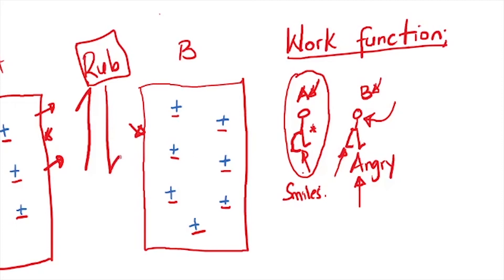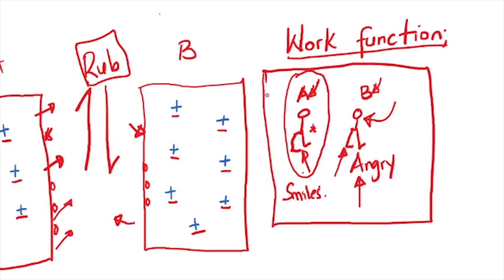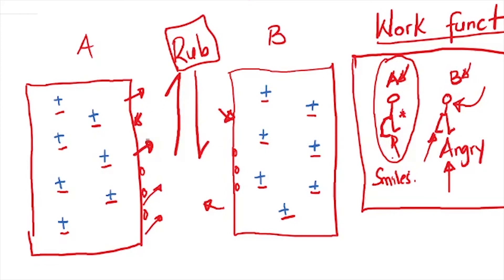The work function is the amount of energy you need to get an electron from the surface of a body. Every body has a certain work function. The body that has a lower work function will be able to release electrons more easily than the other body. So when these two bodies start rubbing each other, the body with a lower work function will release its electrons sooner than the other one. Let's assume body A has a lower work function.